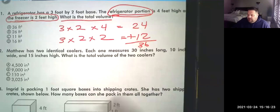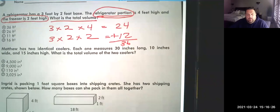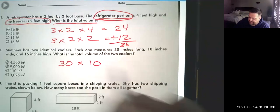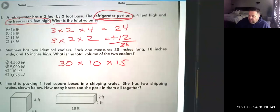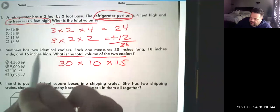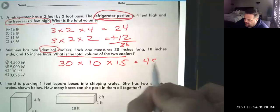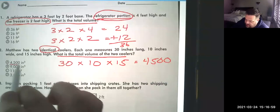Okay, go ahead and try number two. Matthew has two coolers. Each one measures 30 inches long, that's the length, times 10 inches wide, times 15 inches high. What is the total volume of the two coolers? And remember, they're identical. So 30 times 10 is 300 times 15 equals 4500. Now they do give you that as one of the choices, right?